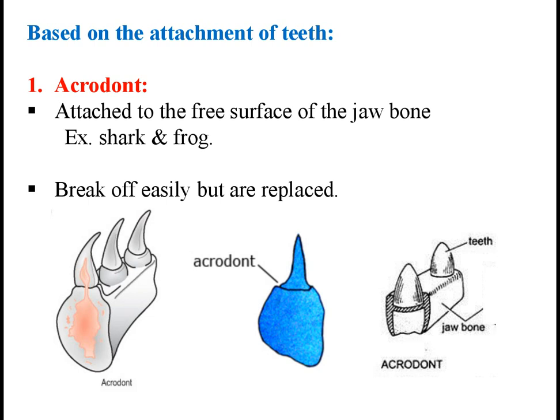We can differentiate teeth based on their attachment to jaw bone. In vertebrates, there are three types of teeth based on attachment: acrodont, pleurodont and thecodont. First one is acrodont. In this type, the base of the teeth are attached to the free surface of the jaw bone, as seen in the diagram. Such teeth are rootless and can easily break off, but they are replaced by new teeth. Examples are shark and frog.